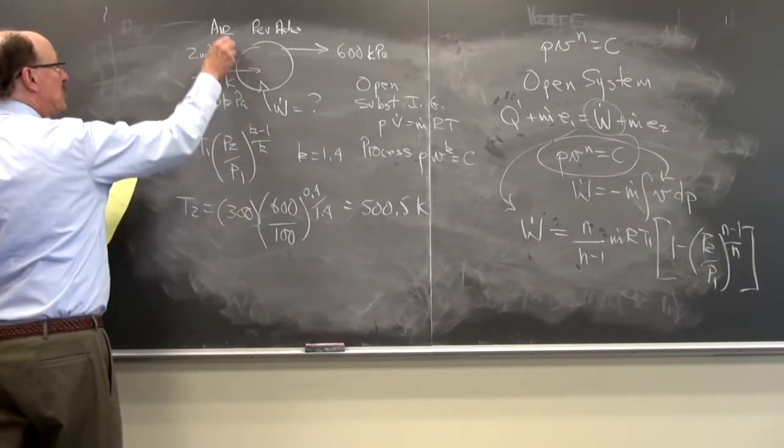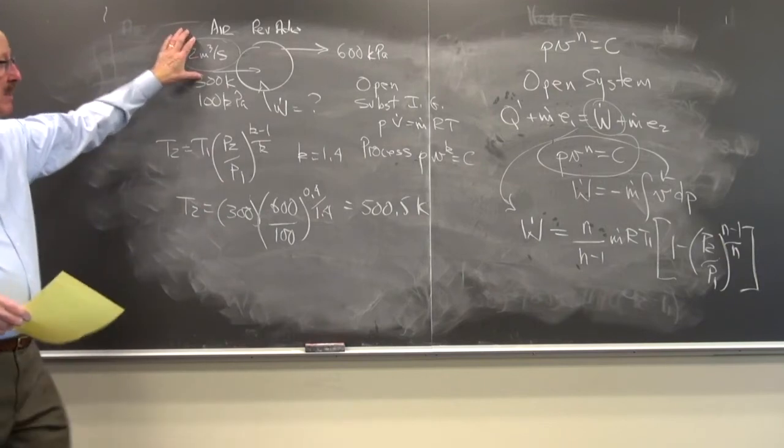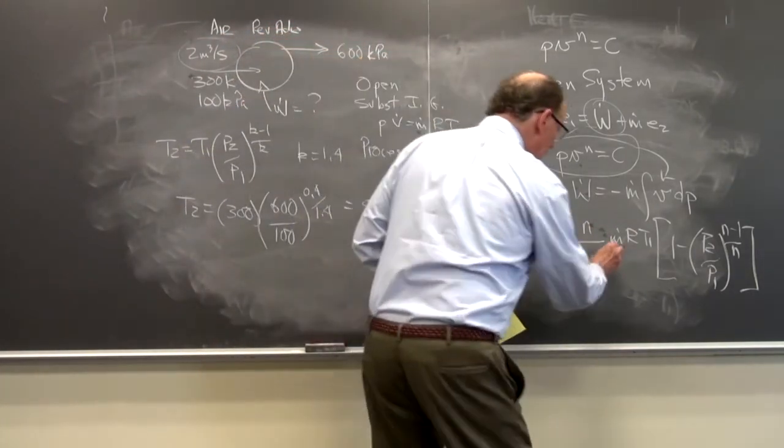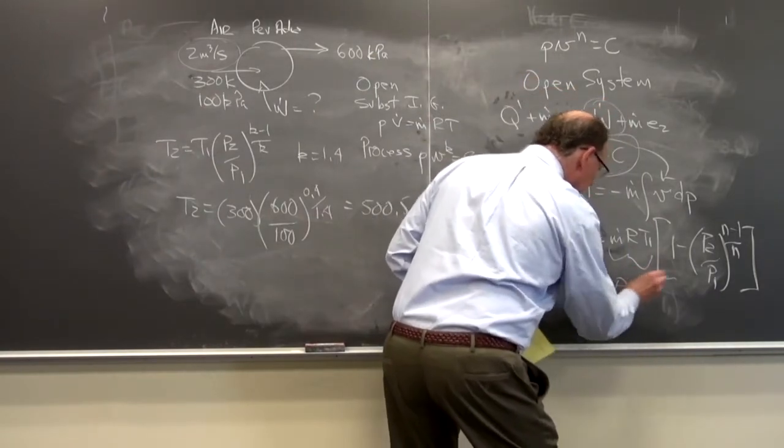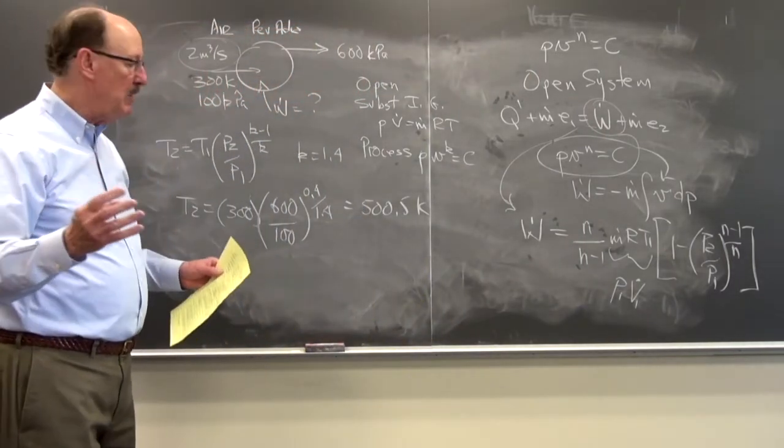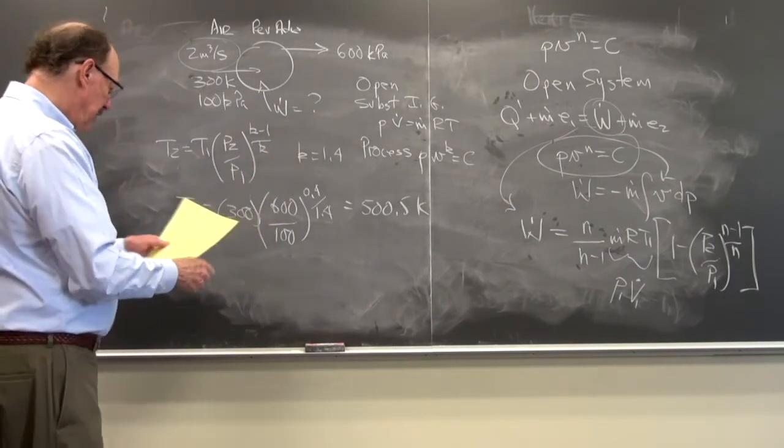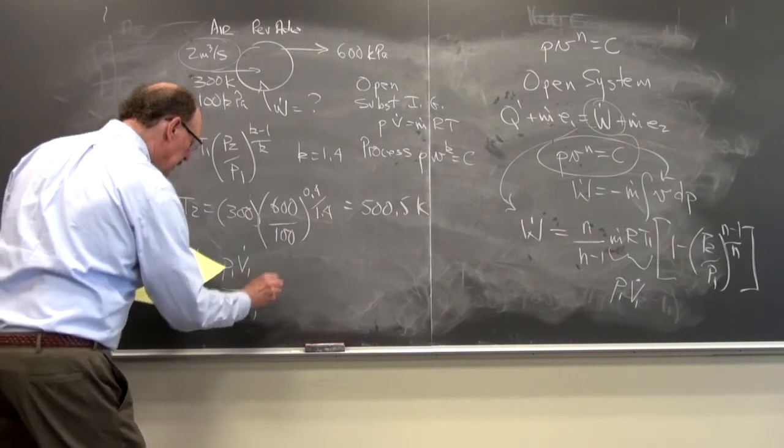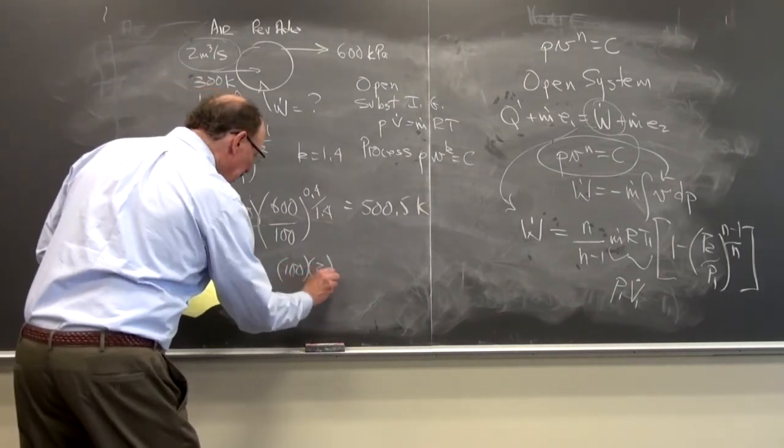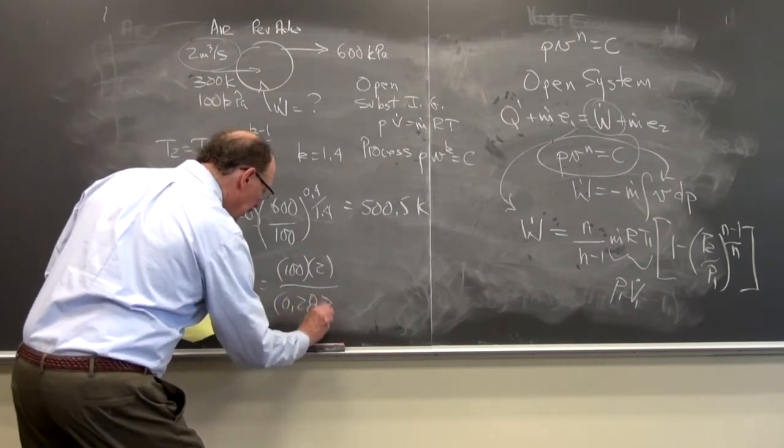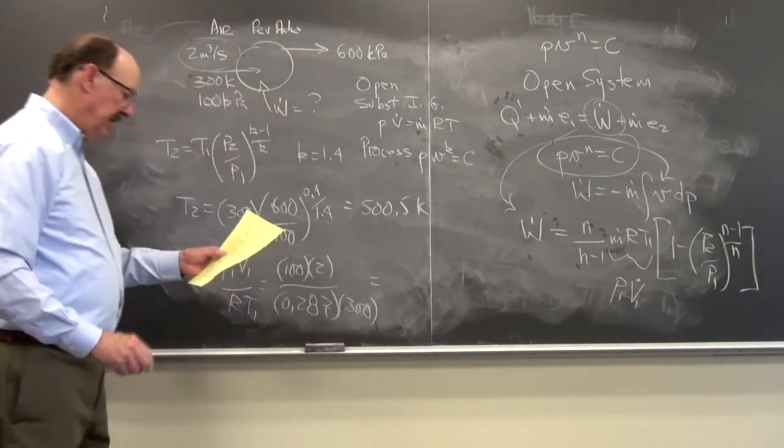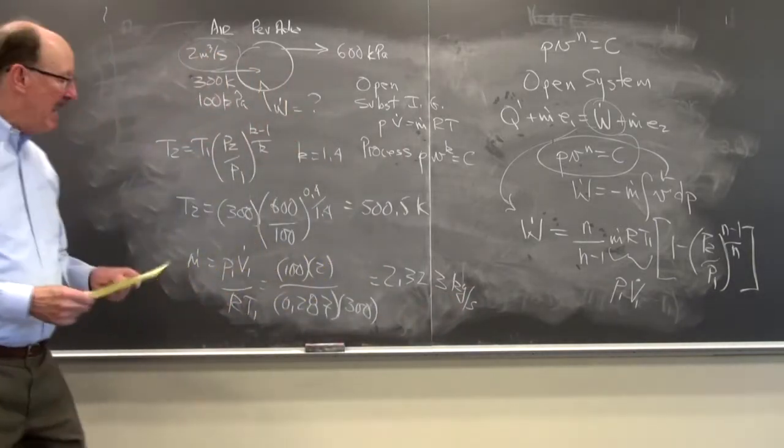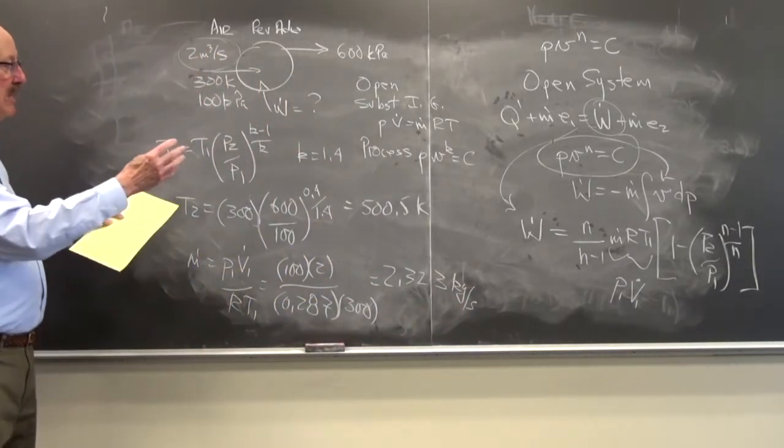I'm curious about my mass flow rate. This is volume flow rate. I need mass flow rate, I can apply this. Notice in this equation I need mass flow rate. I could replace this by P1 V1 dot. So truly I don't need mass flow rate, but typically I need it. But I could apply the ideal gas law there. And so the mass flow rate is equal to P1 V1 dot over RT1. So this is 100 times 2 divided by 0.287 times 300. And this is equal to 2.323 kilograms per second. So that gives us the mass, so I converted that to mass flow rate. And now I can substitute in and find the power.